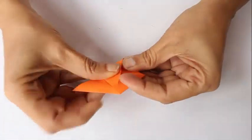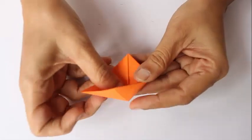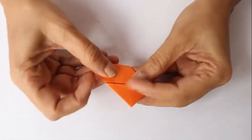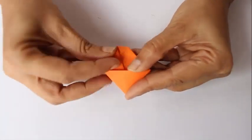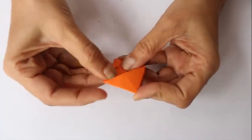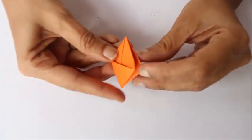What you see is a square with two triangles popping out. Fold these triangles inside the square, one on each side, and the hexahedron is almost ready. We just have to give it a little push.